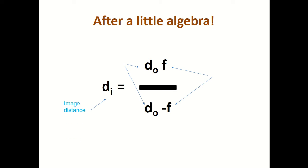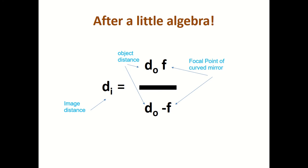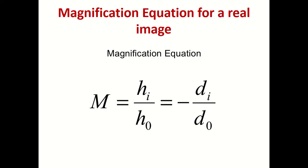In this equation, di means image distance, do means object distance, and f means focal point. This equation works for a curved mirror — either convex or concave. We also have the magnification equation, which gives you the ratio of the height of the image to the height of the object. There's a negative sign in there, which is important when it comes to determining orientation and deciding if the image is real or virtual.